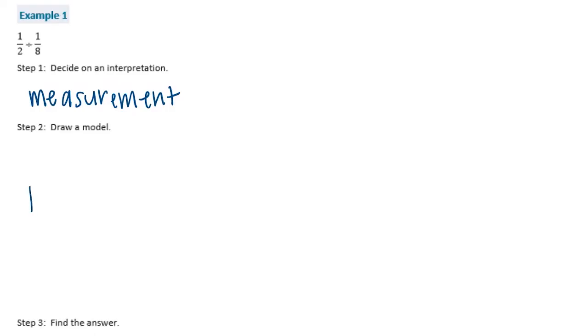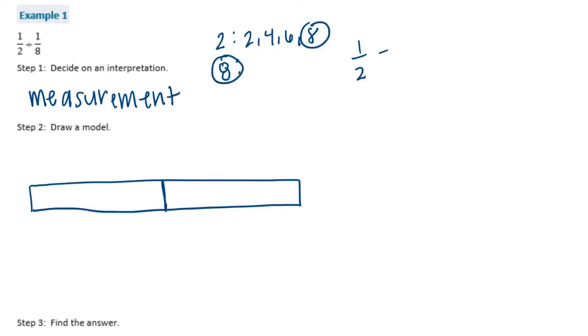So draw a model. I'm going to use a tape diagram. So we have 1 half divided by 1 eighth. But remember, we need to find a common denominator. So let's list the multiples for 2 and 8. So I already found 8. We can leave 1 eighth alone, but I need to change 1 half into eighths. So 4 eighths. So I'm going to split this into eighths.